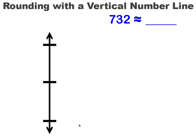If you count by hundreds, it would go 100, 200, 300, 400, 500, 600, 700, 800. 732 would fall somewhere between 700 and 800.